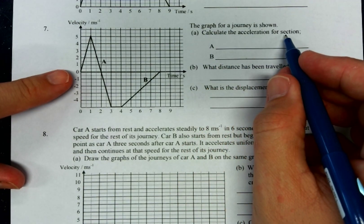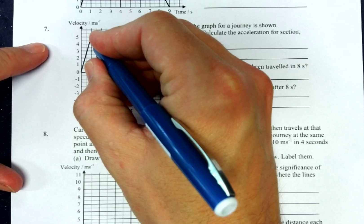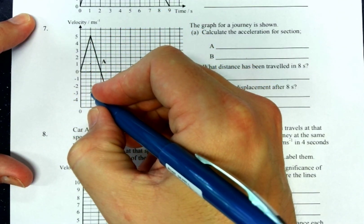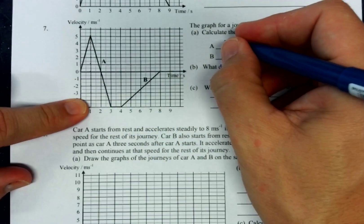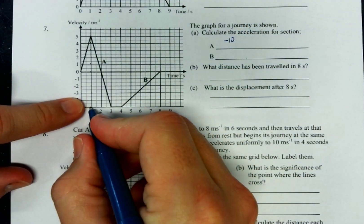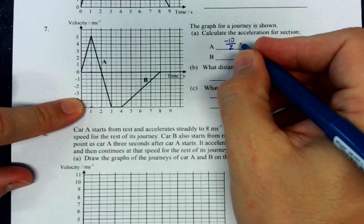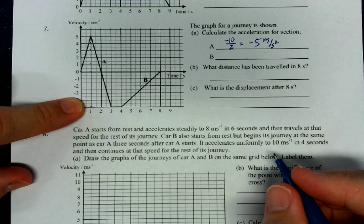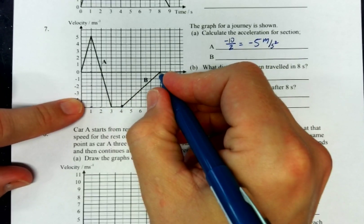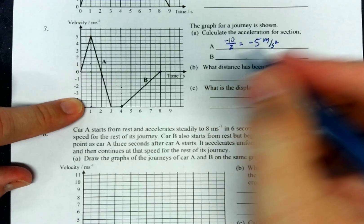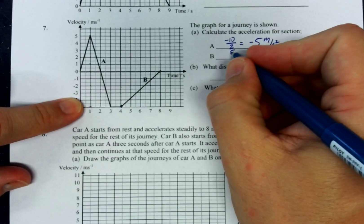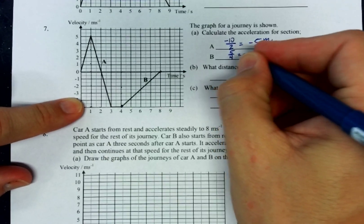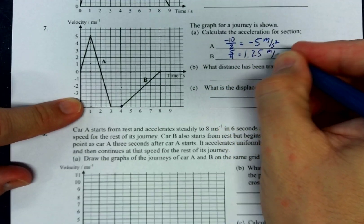This one's a little bit more challenging. Again, it wants us to calculate the acceleration. I think you can do that. For A, we would start up here and go one, two, three, four, five, six, seven, eight, nine, ten. So I went down ten, and then my run is two. So negative ten over two. So that would be negative five meters per second squared. B starts here and ends there. So that would be up one, two, three, four, five. So it would be a rise of five and then over one, two, three, four. So a run of four. And that is 1.25 meters per second squared.